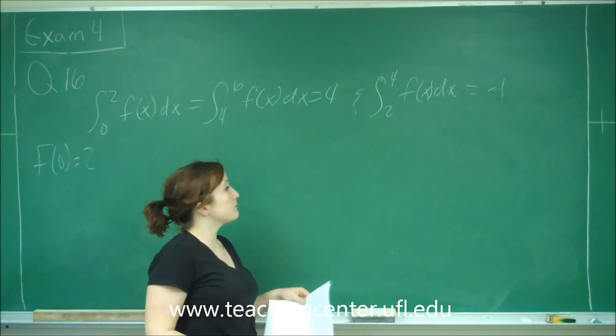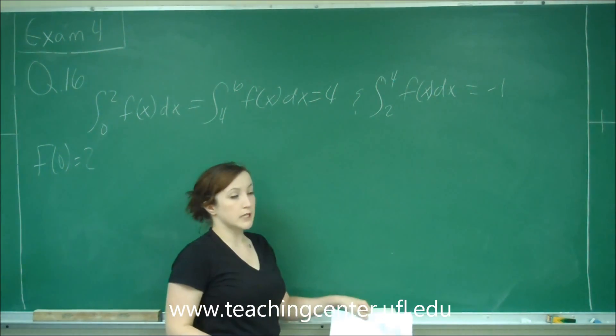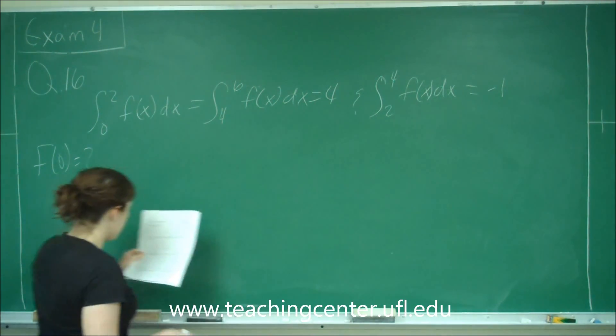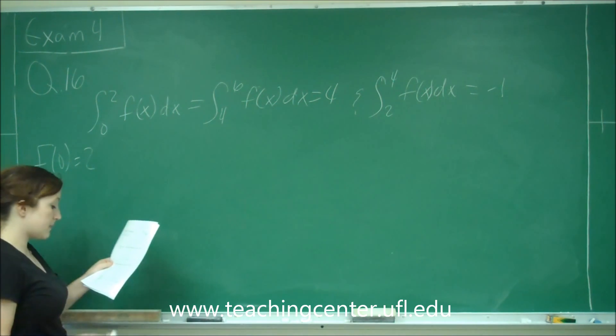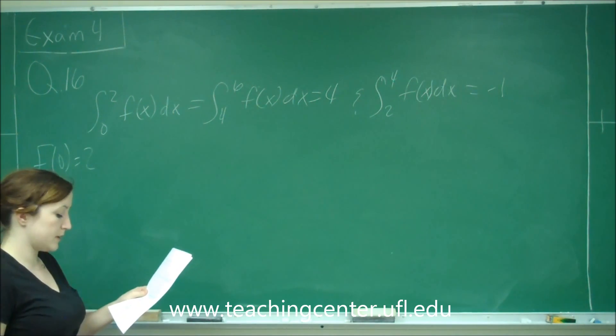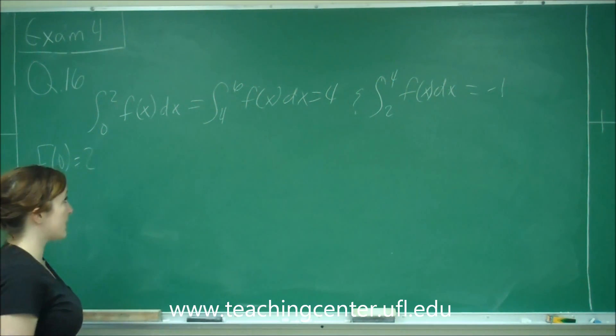And the integral from 2 to 4 of f of x is equal to negative 1. And it says if F of 0 is equal to 2 for some antiderivative, capital F of little f, then use the fundamental theorem to find F of 6.